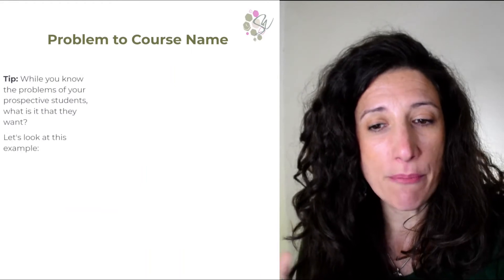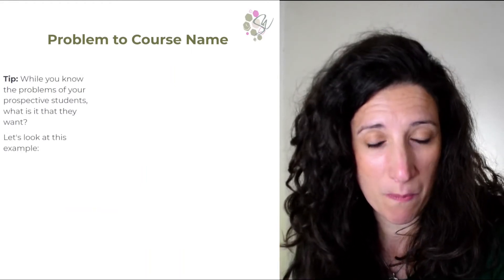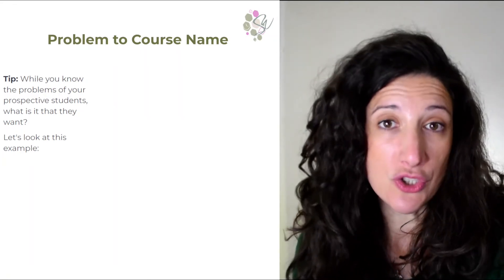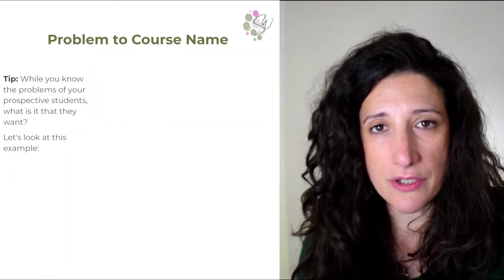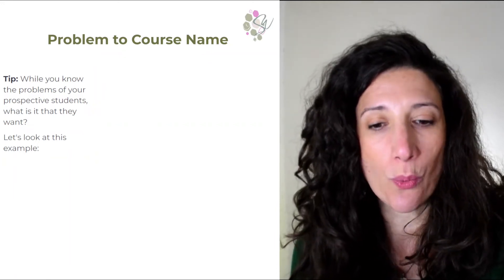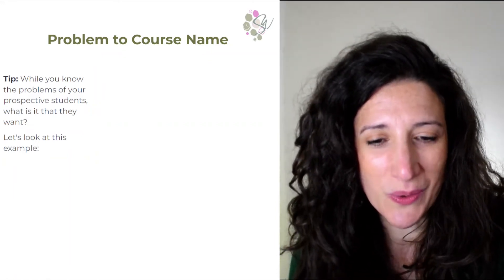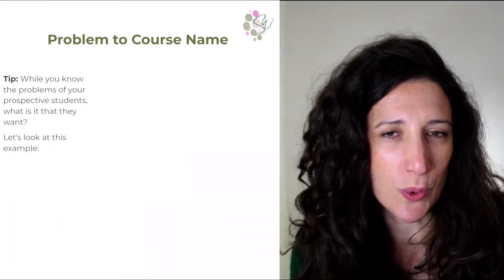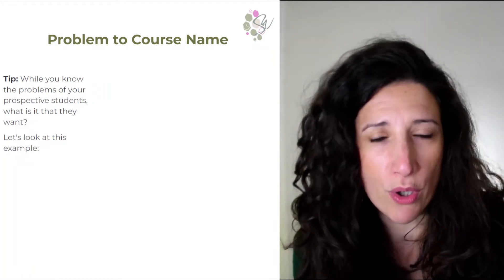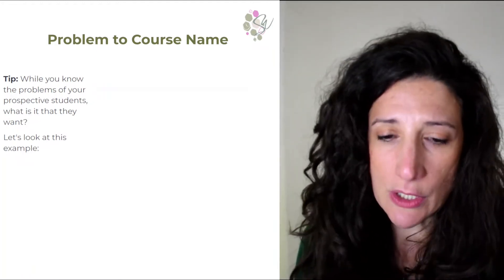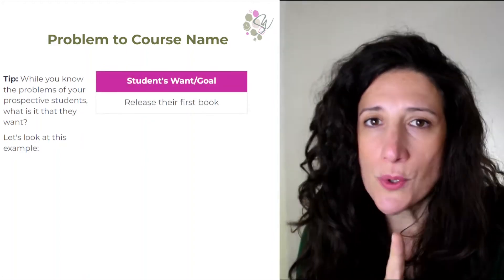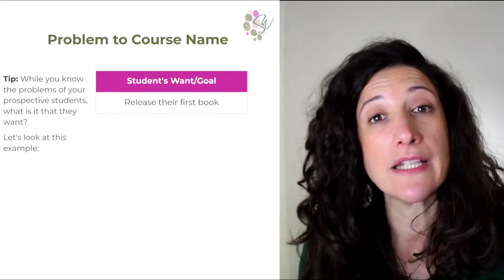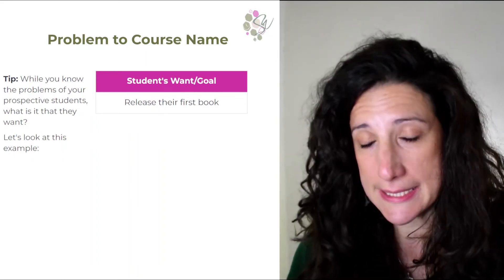When we go from a problem to a course name, while we might easily know what our students' problems are through market research, we really also need to tap into what they want. A problem my students have is that they don't know where to start with their course goal, but nowhere in that does it talk about their goal, their wants, their desires. So let's look at a different example — we're going to look at a student's want or goal, specifically that they want to release a new book.